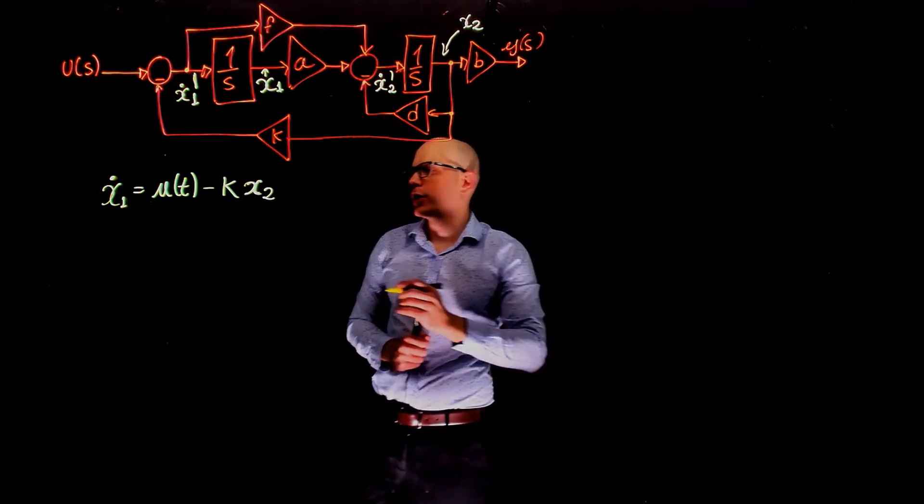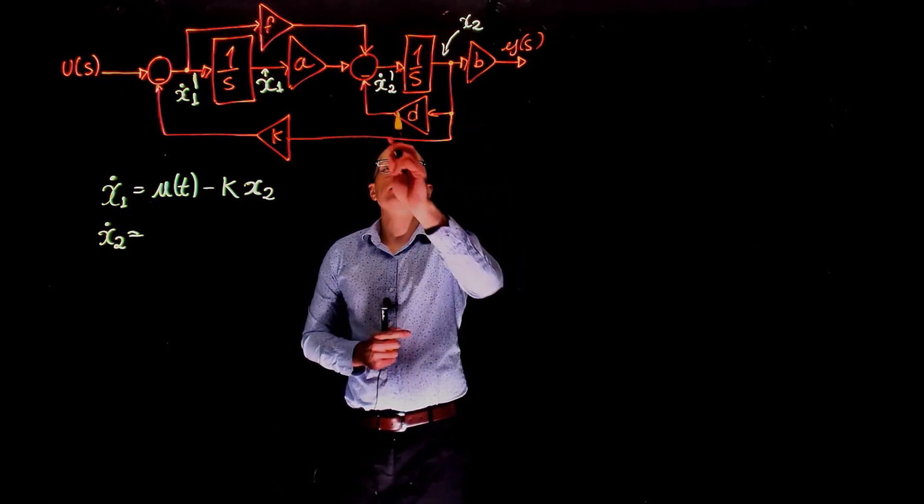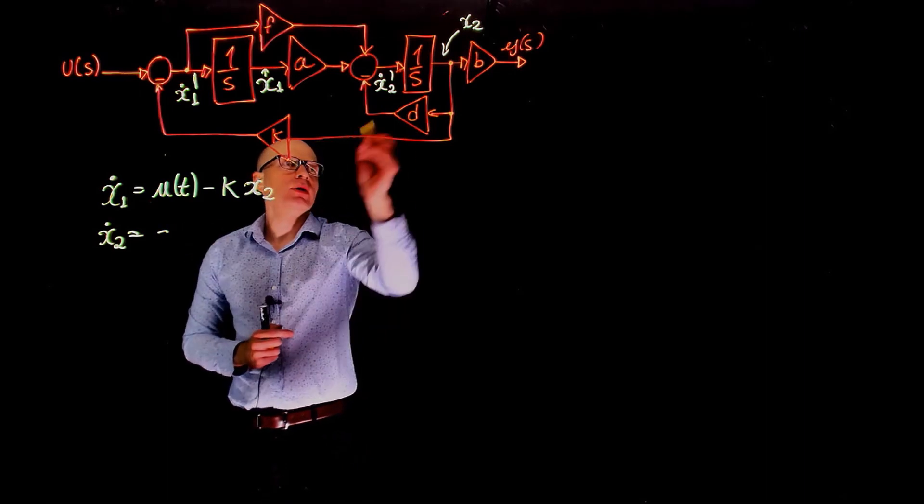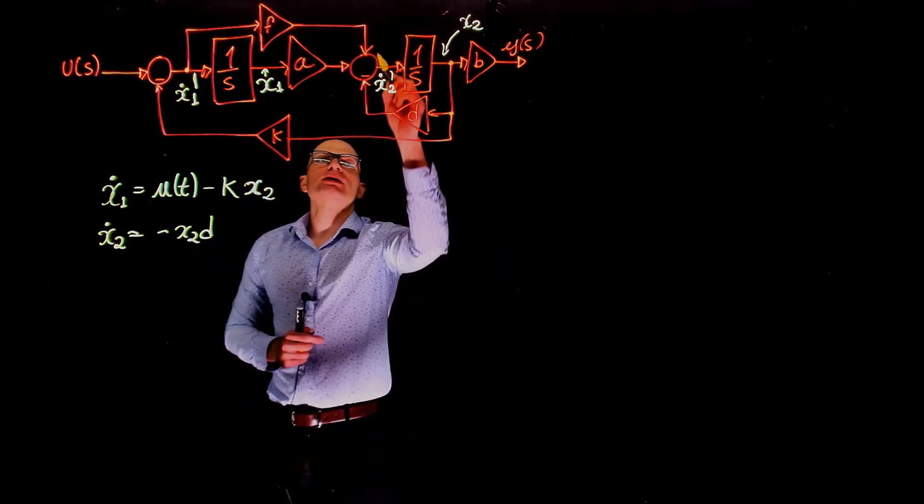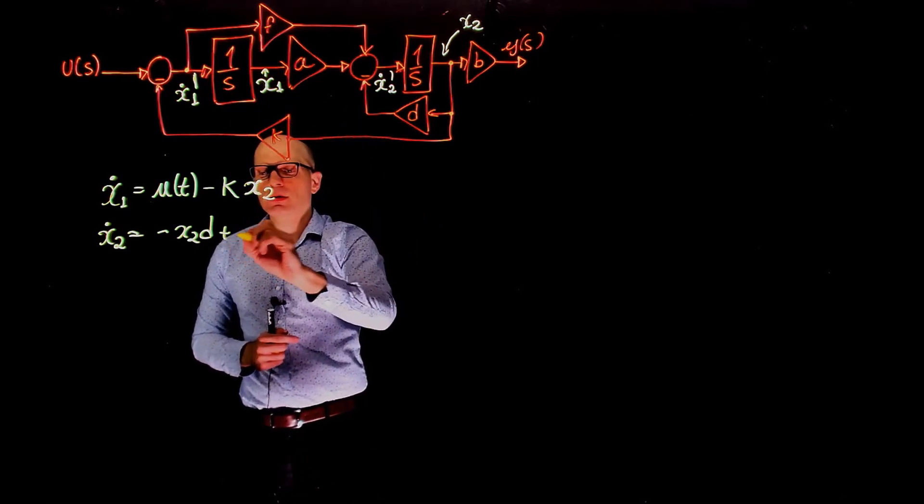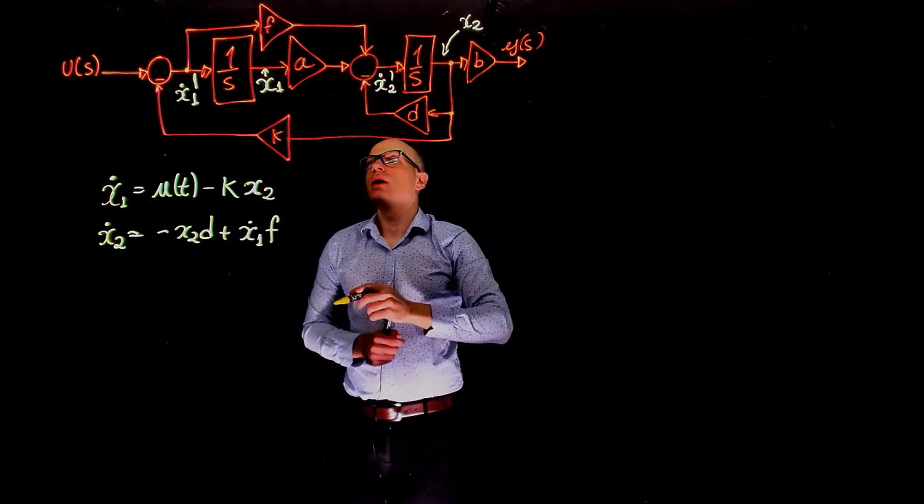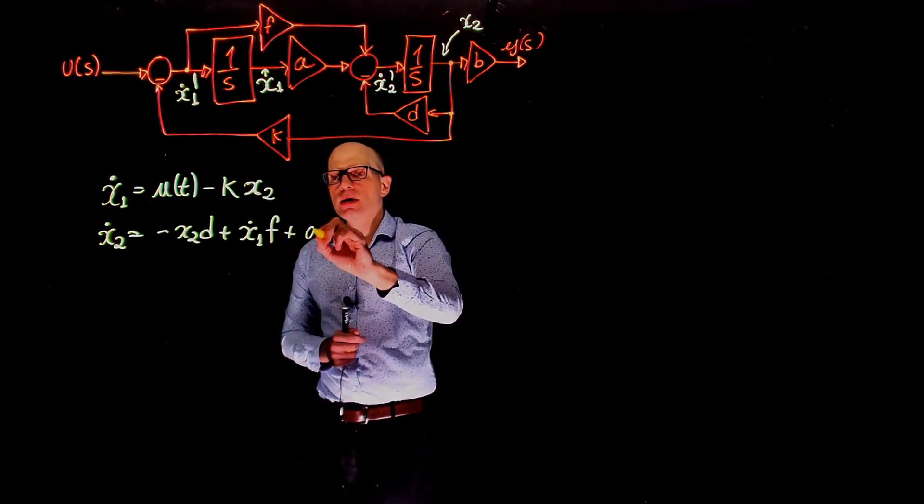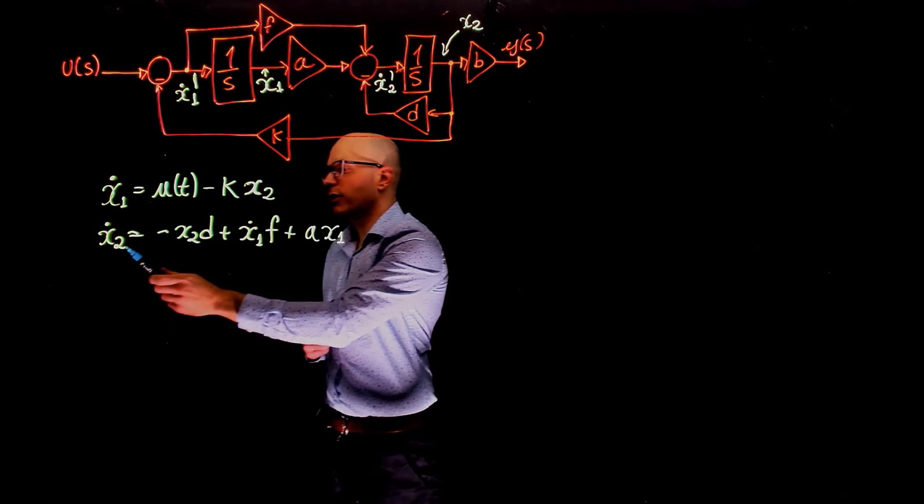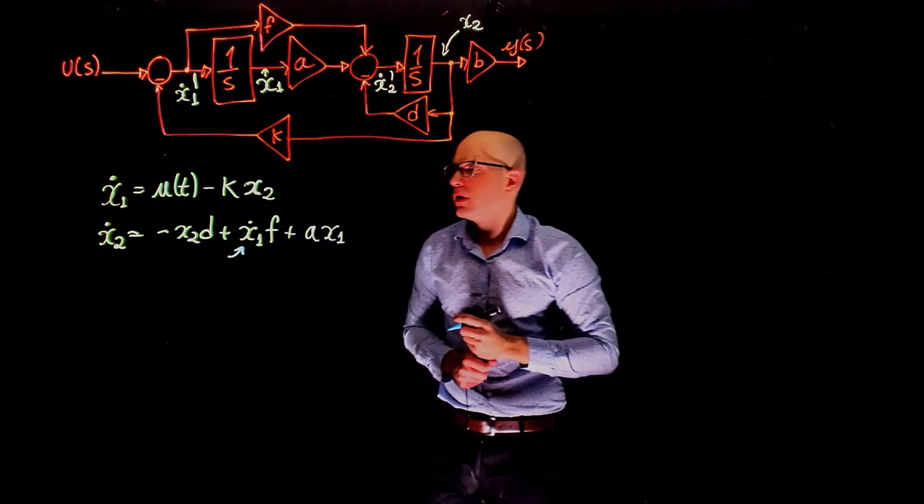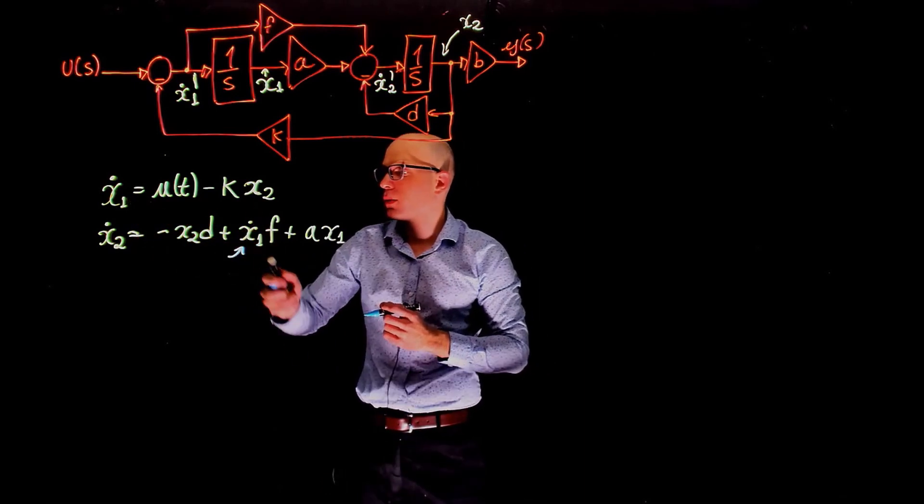Now what is x2 dot? x2 dot is x2 times d negative, so it's negative x2 times d with the signal injected here, plus the signal on top there, which is plus x1 dot times f, and this is the top branch here, plus this part here, which is a times x1. Now we have a problem in the second expression because we have the derivative of x2, and we also have the derivative of x1. We need to get rid of this derivative of x1. How do we do that?